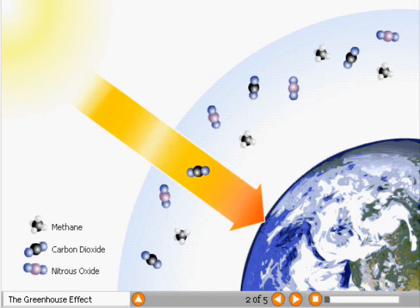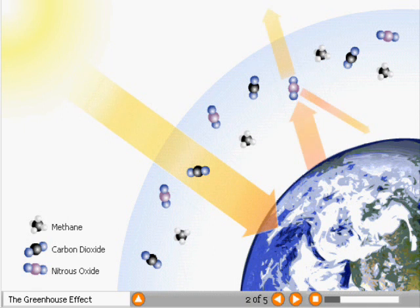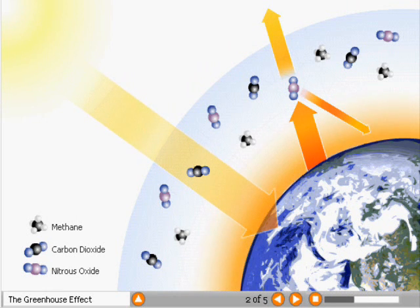The greenhouse effect occurs when sunlight passes through the atmosphere and strikes the Earth. Some of the light is reflected and some is absorbed. The absorbed light warms the surface of the Earth.